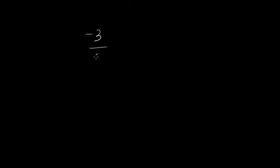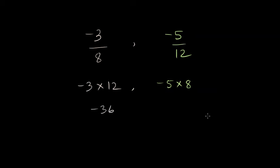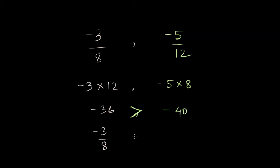Let's see another example. We have -3/8 and compare it with -5/12. We multiply -3 and 12 on the left, and -5 and 8 on the right. The left-hand multiplication gives -36, while the right-hand side gives -40. Since -36 is greater than -40, we place the greater-than sign, and therefore the original fraction -3/8 is greater than -5/12.